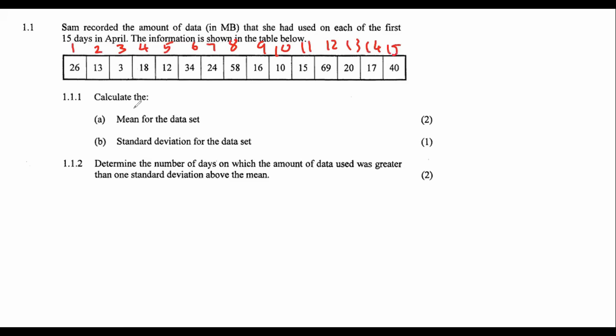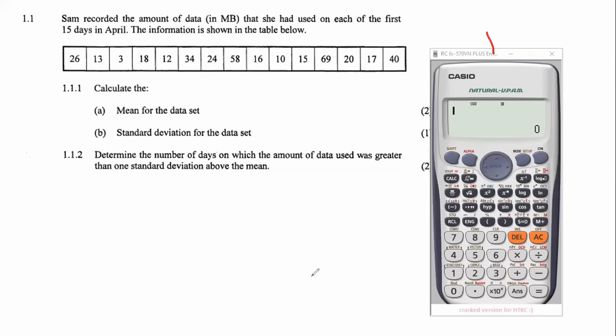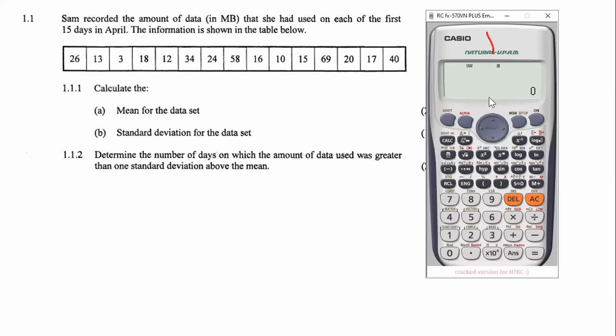It says calculate the mean. We all know how to do that, it's the average. So what we do is add up all of the numbers, although there is a faster way for us to do this. We can do it on the calculator because they're asking for the mean and also the standard deviation. So we can use the grade 11 part of our calculator.